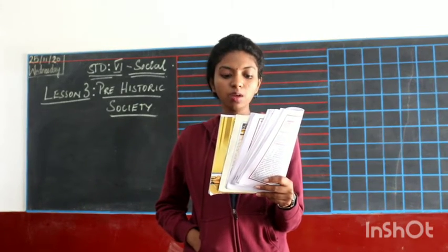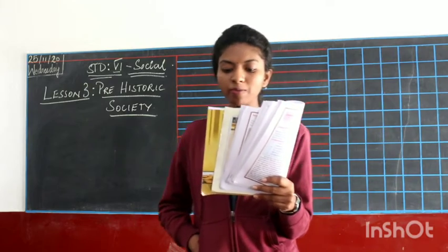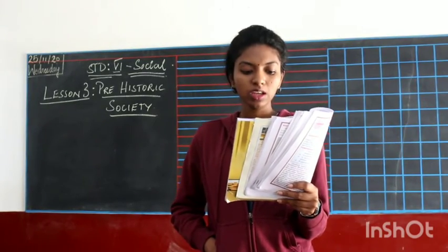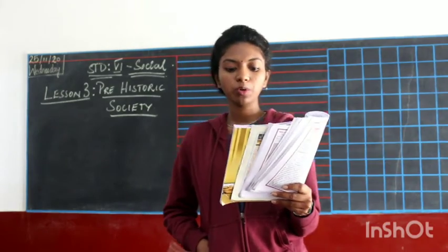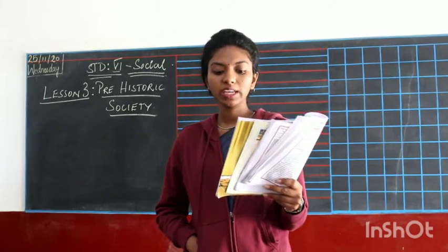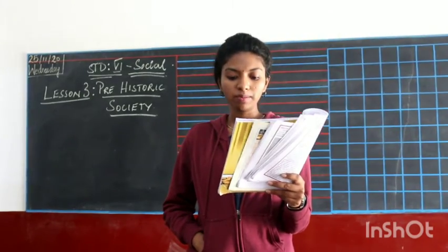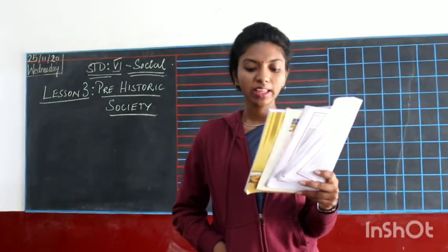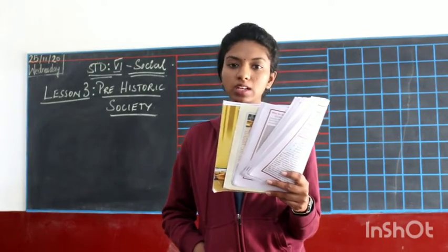As you would have seen in your textbooks, human beings evolved from apes — stone age man leading to us. 5 million years ago bipeds appeared, and 1.8 million years ago human beings evolved. Human beings whose physical features were similar to modern man first appeared in Africa.